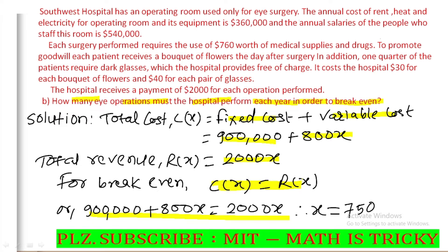Setting total cost equal to total revenue: 98,000 plus 800x equals 2,000x. Solving gives 750 operations — no loss. So 750 operations per year is the break-even point. That is the result for the second part.